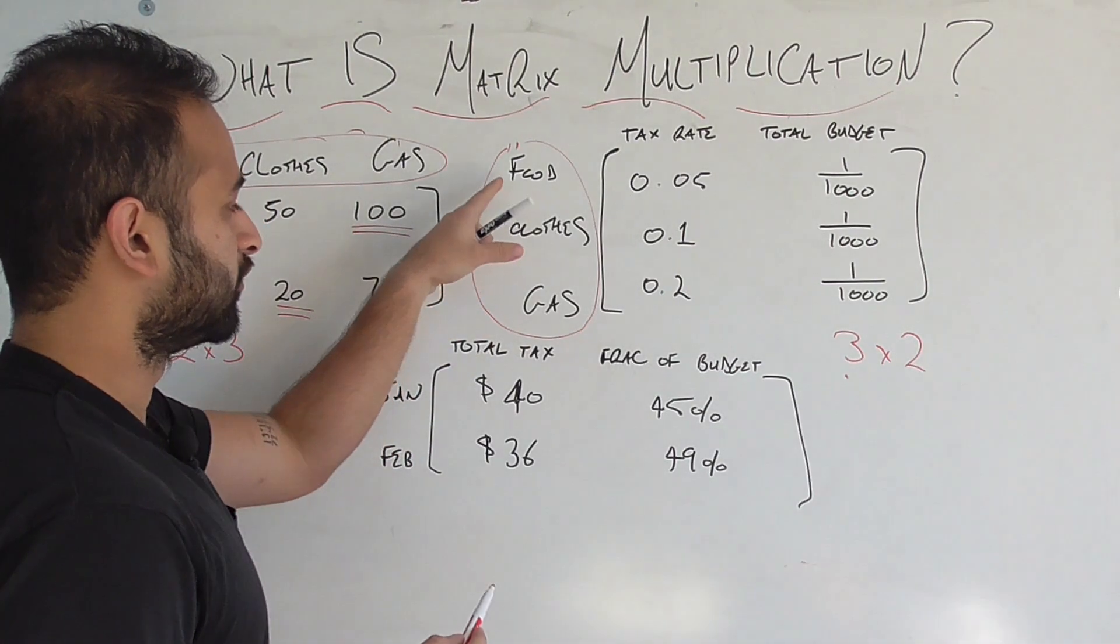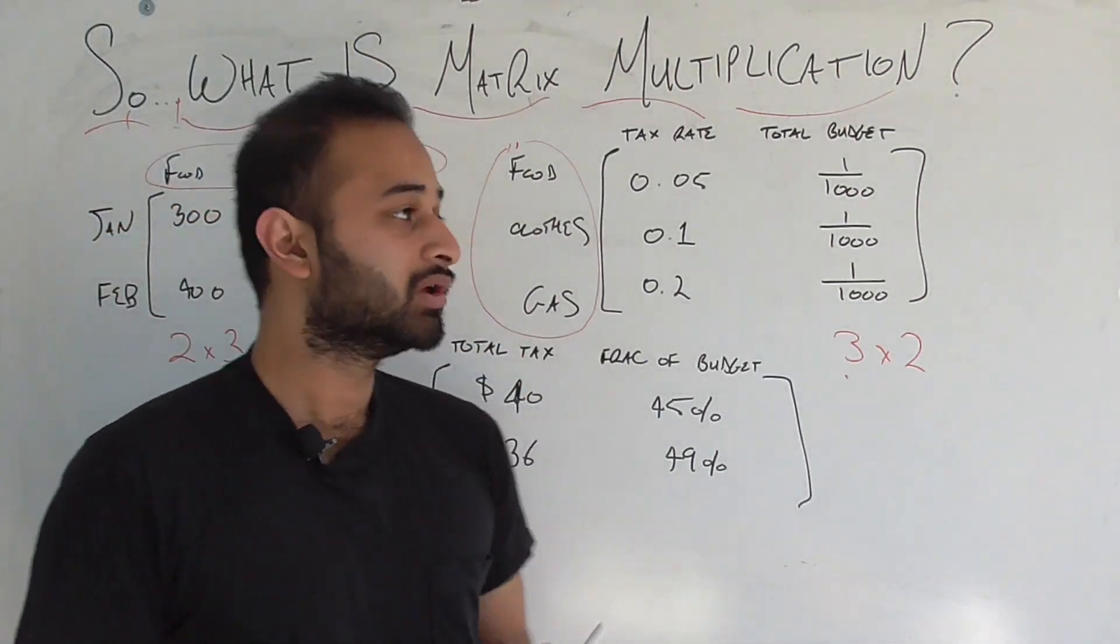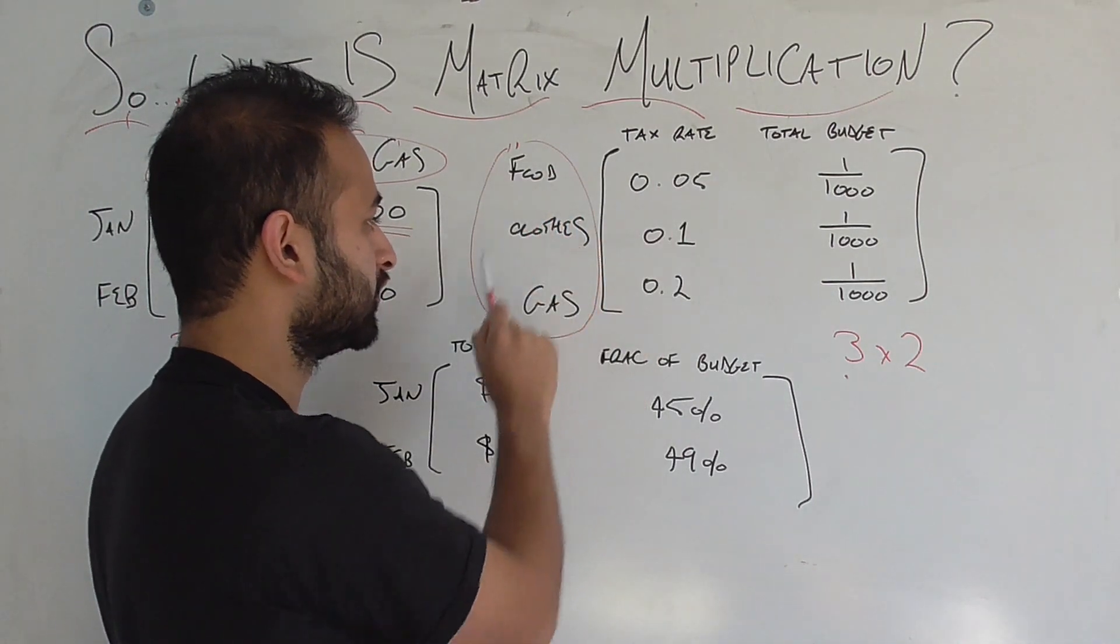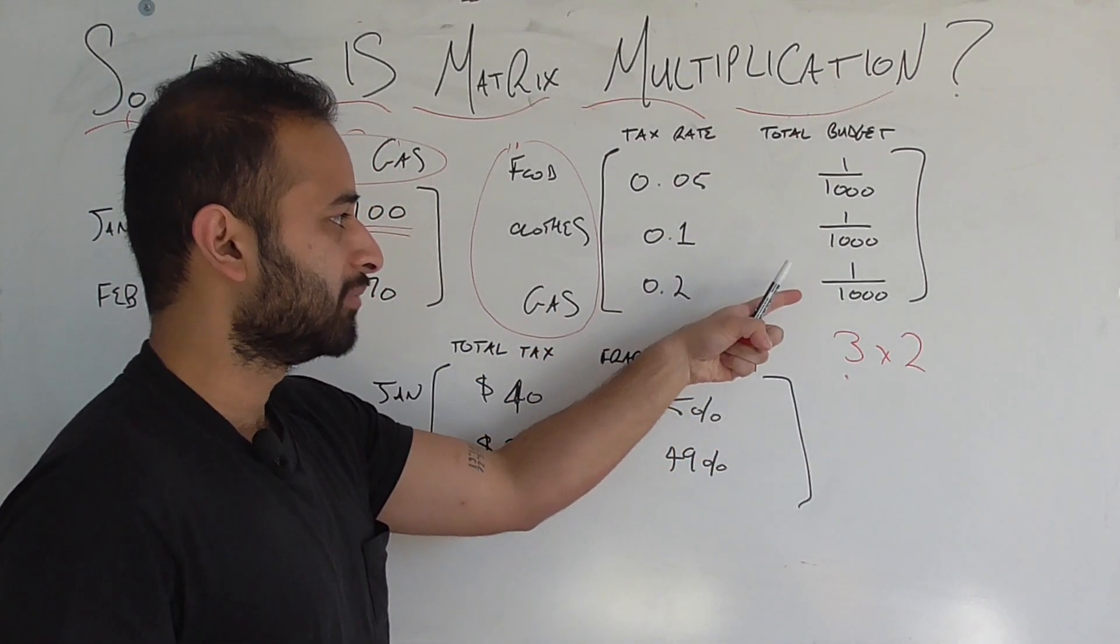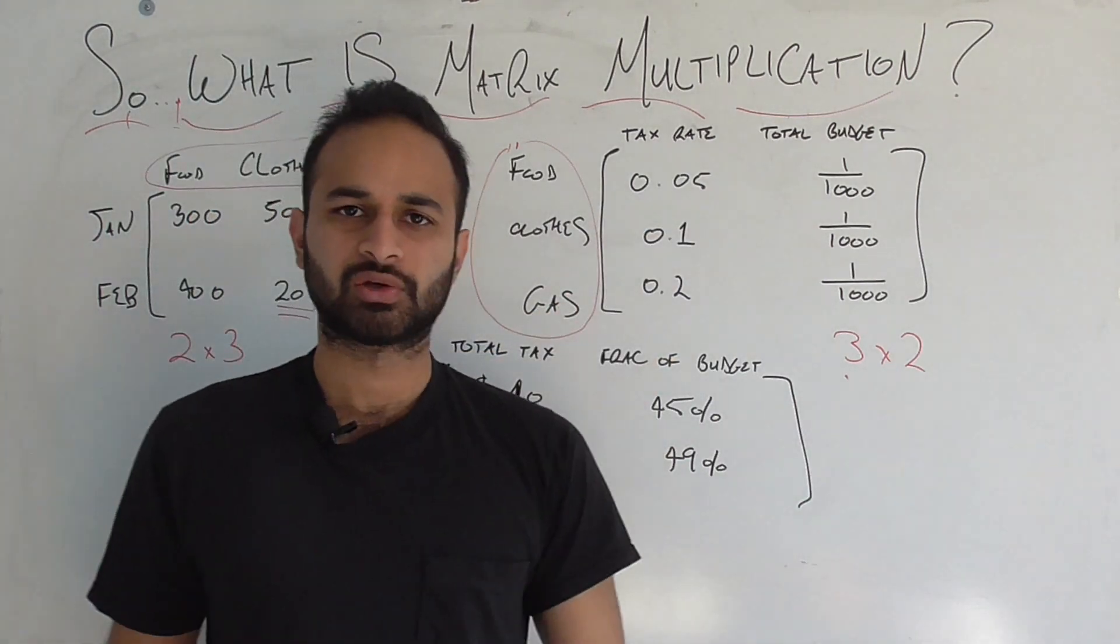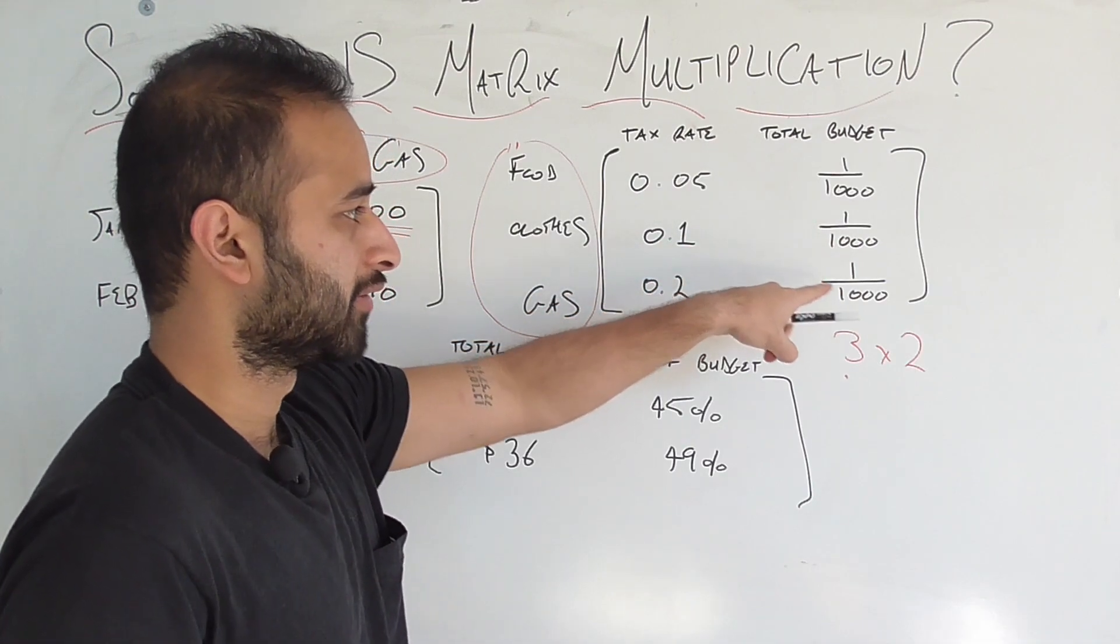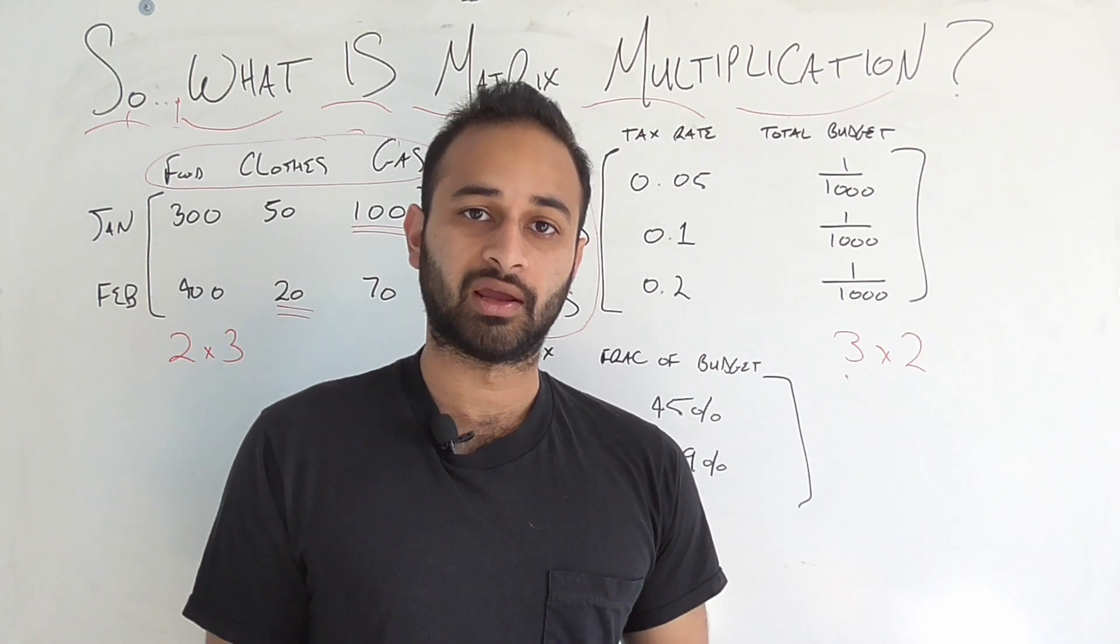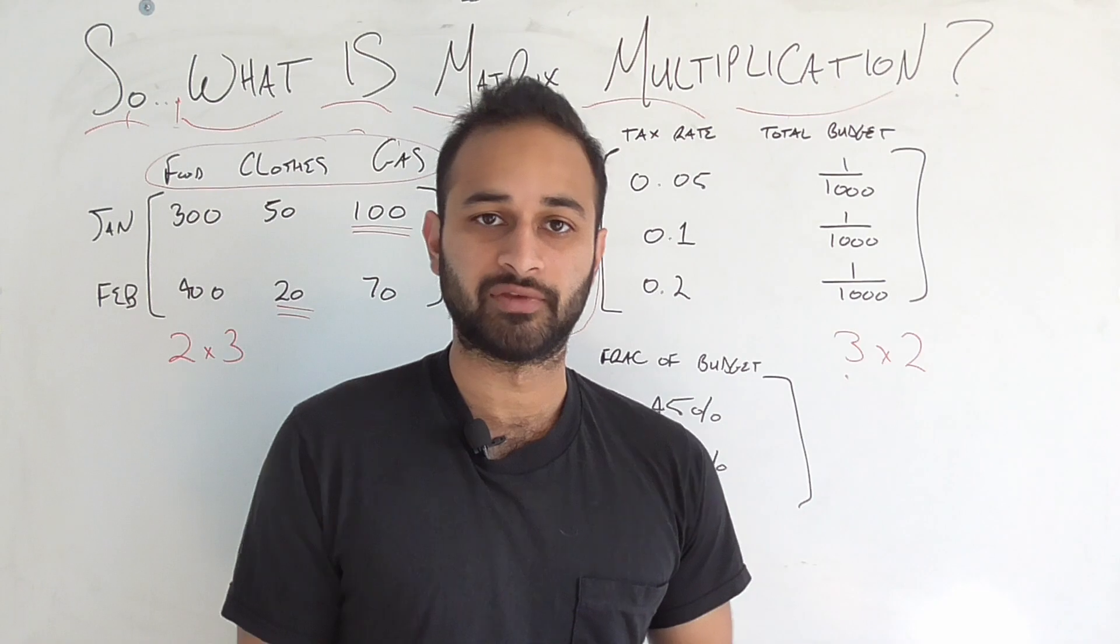And this matrix tells you, for each of the three categories, food, clothes, and gas, tells you two pieces of information. The first one is the tax rate you experienced, so a 5% tax on food, 10% on clothes, 20% on gas. And the last column is all the same, it's just a divisor for the total budget. So we said that every month, you have a thousand dollars to spend, so we put one over a thousand for all three of these entries, so that when we do the matrix multiplication, we'll get a fractional amount of spending for that month. How much of the budget you used up that month on these categories, okay?